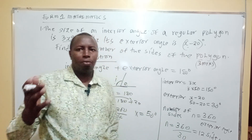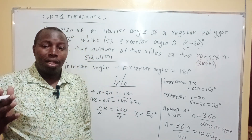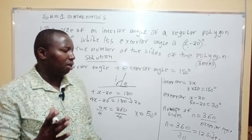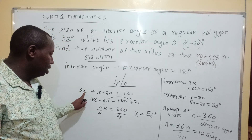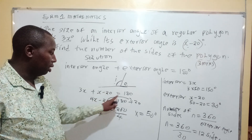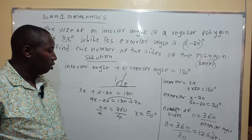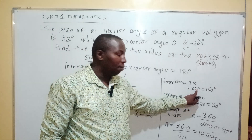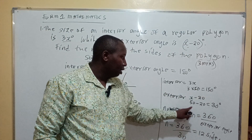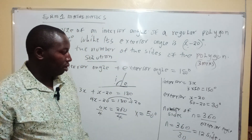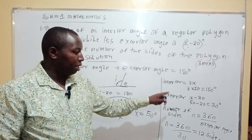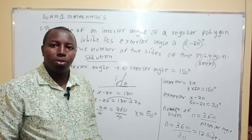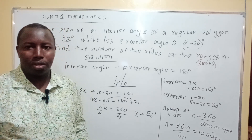So that is how you solve the question on the relationship between exterior and interior angles. Exterior plus interior equals 180. You are provided with the interior and the exterior. When you add them you get 180, so x equals 50. Then you substitute: the interior angle is 3 times 50 equals 150, and the exterior is 50 minus 20 equals 30. The number of sides of the polygon is given by 360 over the exterior angle, so n equals 12. Thank you very much.